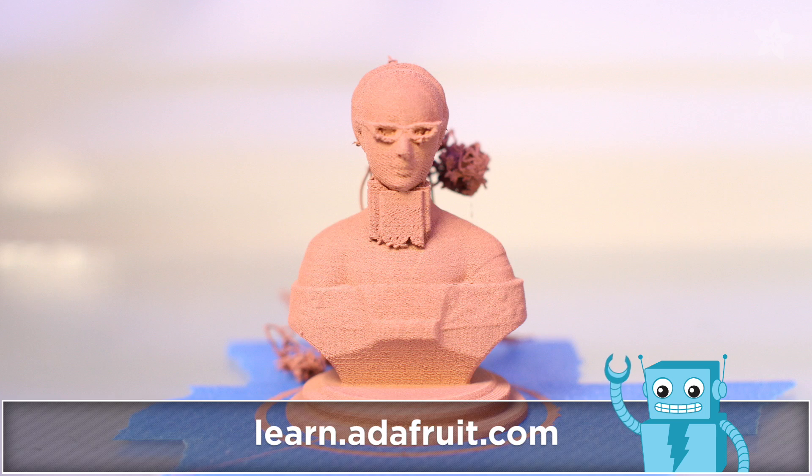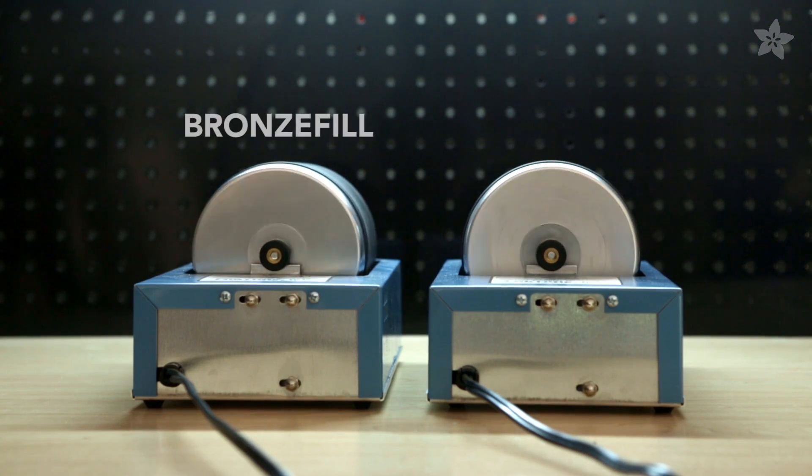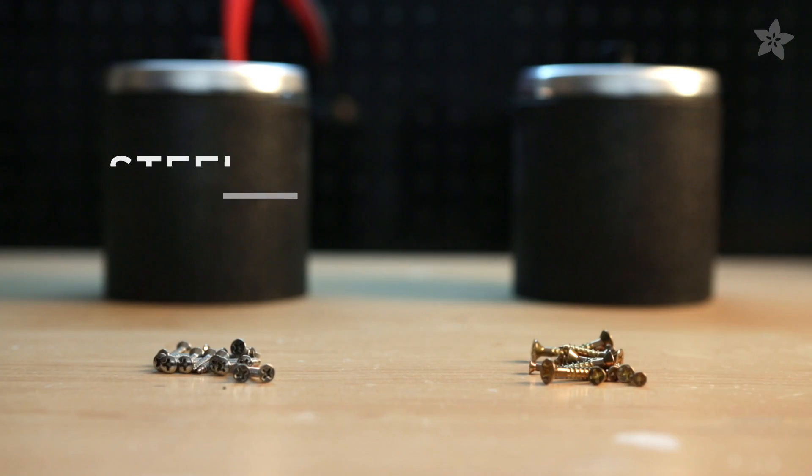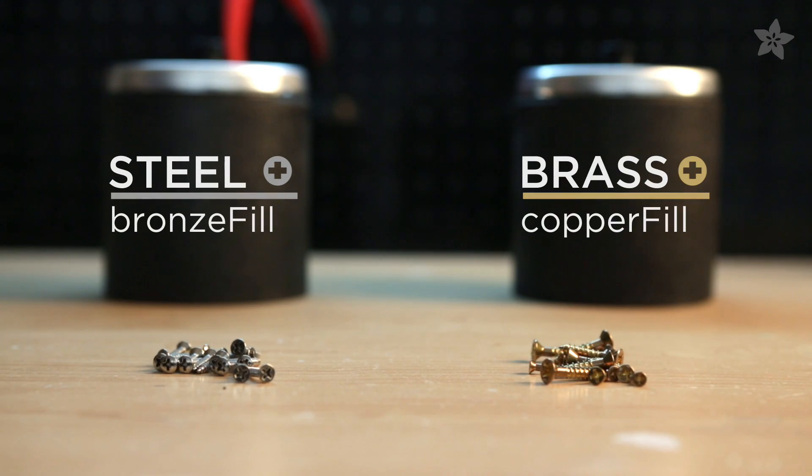We recommend using two different rotary tumblers, not just to speed up the process but to avoid mixing and blending the two materials together. We'll use screws as the medium - steel screws for BronzeFill parts and brass screws for CopperFill.